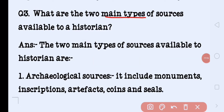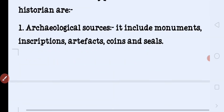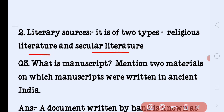What are the two main types of sources available to a historian? The two main types are: archaeological sources — which include monuments, inscriptions, artifacts, coins and seals — and literary sources, which include religious literature and secular literature, i.e., written records.